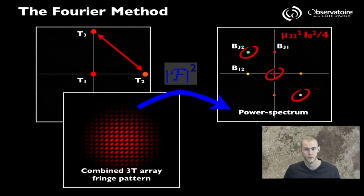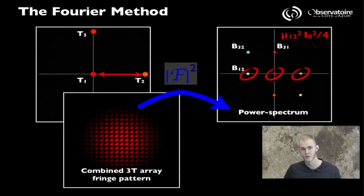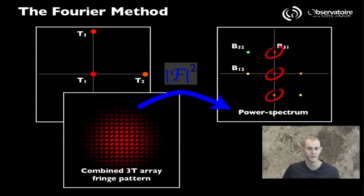The same thing goes for the other two baselines. T1, T2, the horizontal baseline, again produces its own set of two satellite peaks around the central one. And the intensity of these side lobes is directly proportional to the visibility modulus that is sampled by this baseline. And the final baseline, the vertical one in our case, mu 3 1, can also be extracted just the same from this.